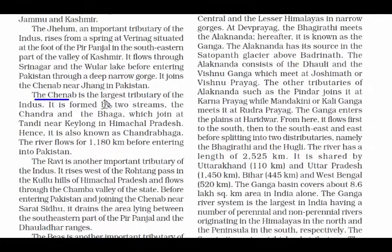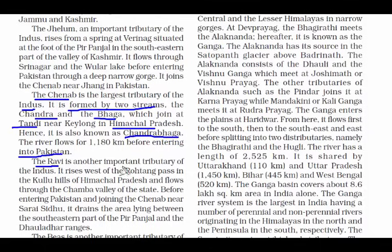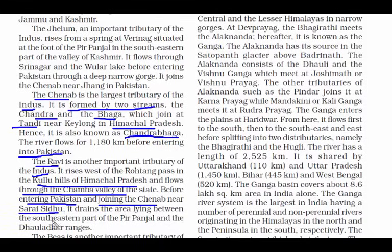Chenab is the largest tributary of the Indus. It is formed by two streams — the Chandra and the Bhaga — which join at Tandi near Keylong in Himachal Pradesh. Hence it is also known as Chandrabhaga. Chenab also enters Pakistan. The next tributary is the Ravi, which rises west of the Rohtang Pass in the Kullu hills of Himachal Pradesh, passes through the Chamba Valley, enters Pakistan, and joins the Chenab near Sarai Sidhu. It drains the area between the southeastern part of the Pir Panjal and the Dhauladhar ranges.